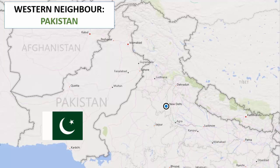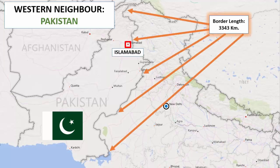Talking about the border, it runs from the northern part to the western part, up to the Arabian Sea. The total land border length is 3,343 kilometers. It goes through the Union Territory of Ladakh, Union Territory of Jammu and Kashmir, then some of Punjab, Rajasthan, and Gujarat. These Indian states share their border with Pakistan. The capital of Pakistan is Islamabad.